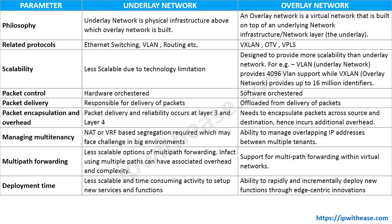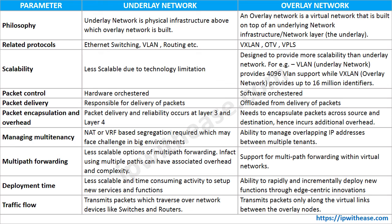Next is deployment time. Deployment time for underlay networks is less scalable and is a time-consuming activity for whatever services or functions need to be deployed. In contrast, overlay networks can deploy new functions rapidly and incrementally through edge-centric innovations. Finally, traffic flow: underlay networks transmit packets that traverse physical network devices such as switches, routers, and firewalls, while overlay network traffic is transmitted along virtual links or virtual networks between overlay nodes.